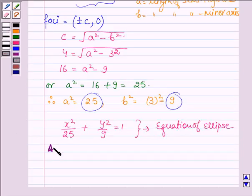Hence the answer is the equation of an ellipse where b is equal to 3, c is equal to 4, and the center is at the origin and foci lie on the x-axis is given by x-square upon 25 plus y-square upon 9 is equal to 1.